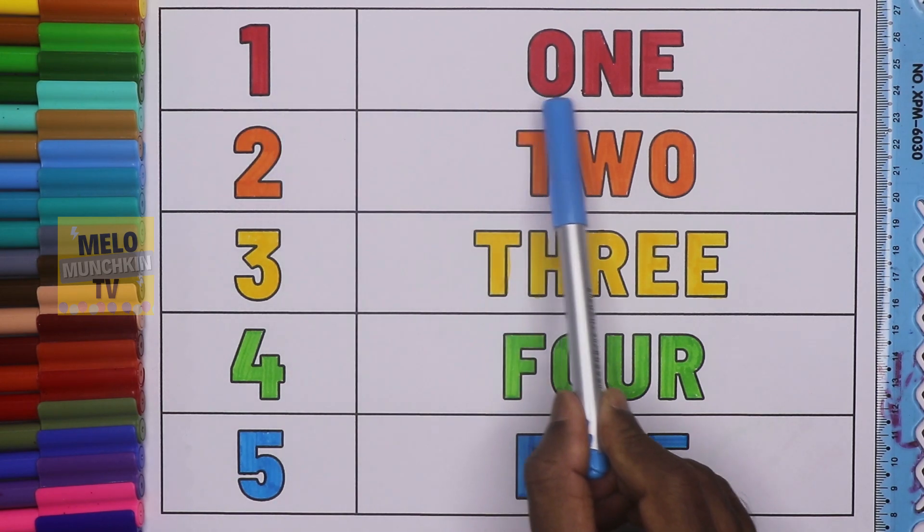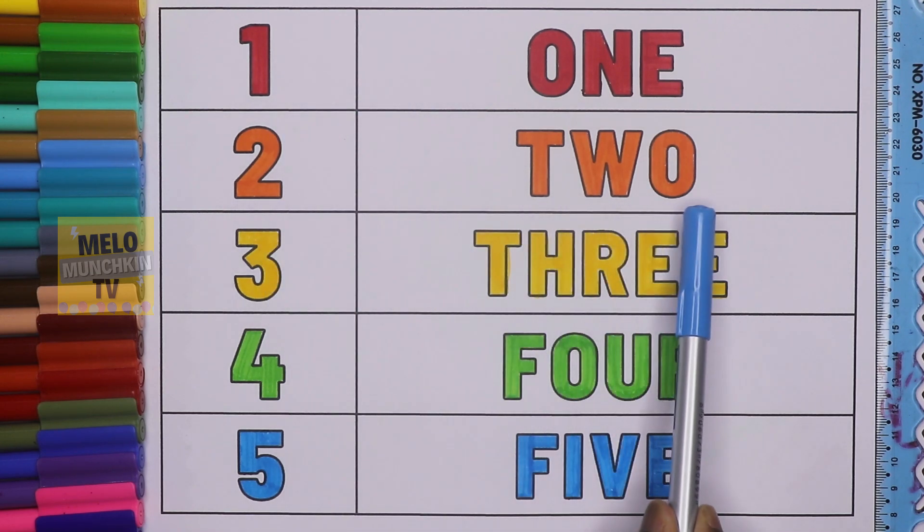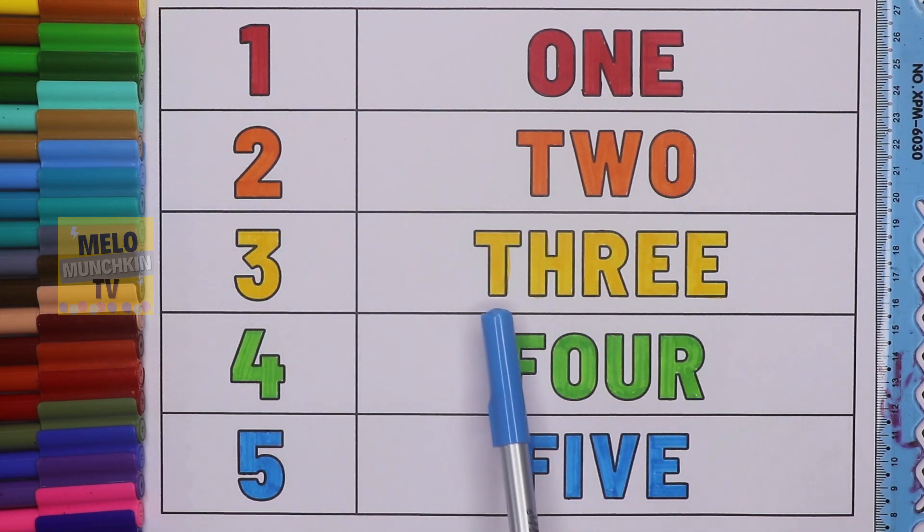So hence we have completed our numbers and number names. So let's recall once again. One, O-N-E, one. Two, T-W-O, two. Three, T-H-R-E-E, three. Four, F-O-U-R, four. Five, F-I-V-E, five.